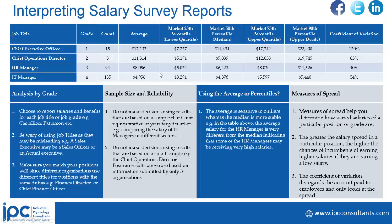When reporting the data, there are a number of indicators used. For example, the average. The challenge with averages is that they are very susceptible to outliers. If there is an extreme value — either low or high — it tends to tilt the average in that direction and can be misleading. For example, you can have an average CEO salary of 10,000, then add an outlier of 50,000 per month and the average goes up significantly. So we don't encourage you to use the average unless you have no other option.